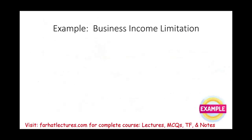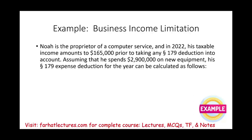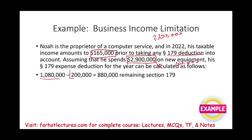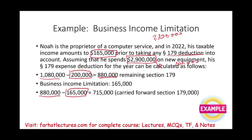Here's a business income limitation example: Noah, a sole proprietor of a computer service company, has taxable income of $165,000 in 2022 prior to Section 179. He spends $2.9 million on new equipment — $200,000 above the $2.7 million threshold. Starting with $1,080,000, we reduce by $200,000, leaving $880,000 eligible for Section 179. But Noah's business income is only $165,000, so he can only deduct $165,000. The remaining $715,000 is carried forward as Section 179 to future years.